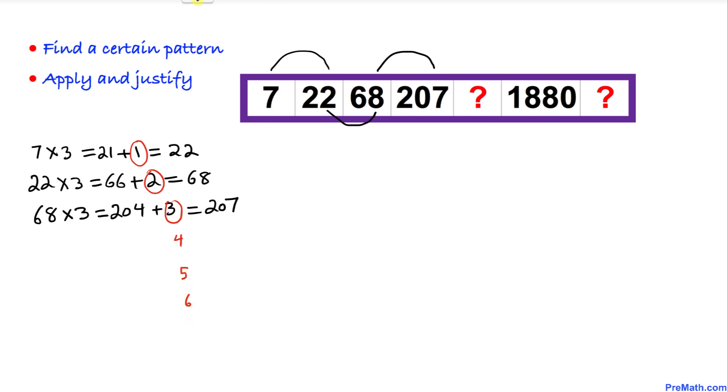So let's move on to our next number. From 207 to this one, it's going to be simply 207 times 3, which is going to give us—we have to be very careful—621, and then we are going to add 4 to this one. So that means this unknown number is going to be 625.